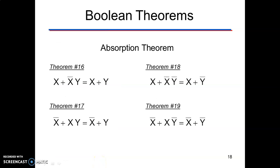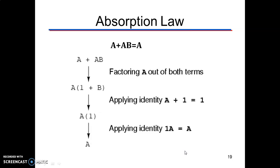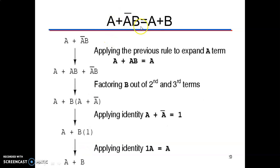Absorption theorem: x + x̄·y = x + y; x + x̄·ȳ = x + ȳ; x̄ + x·y = x̄ + y; x̄ + x·ȳ = x̄ + ȳ. Proof: a + a·b = a — taking a in common gives a·(1+b) = a·1 = a. Also, a + ā·b = a + b: expand a as a + a·b (using absorption), so a + a·b + ā·b. Taking b common from the last two terms gives a + b·(a + ā) = a + b·1 = a + b.